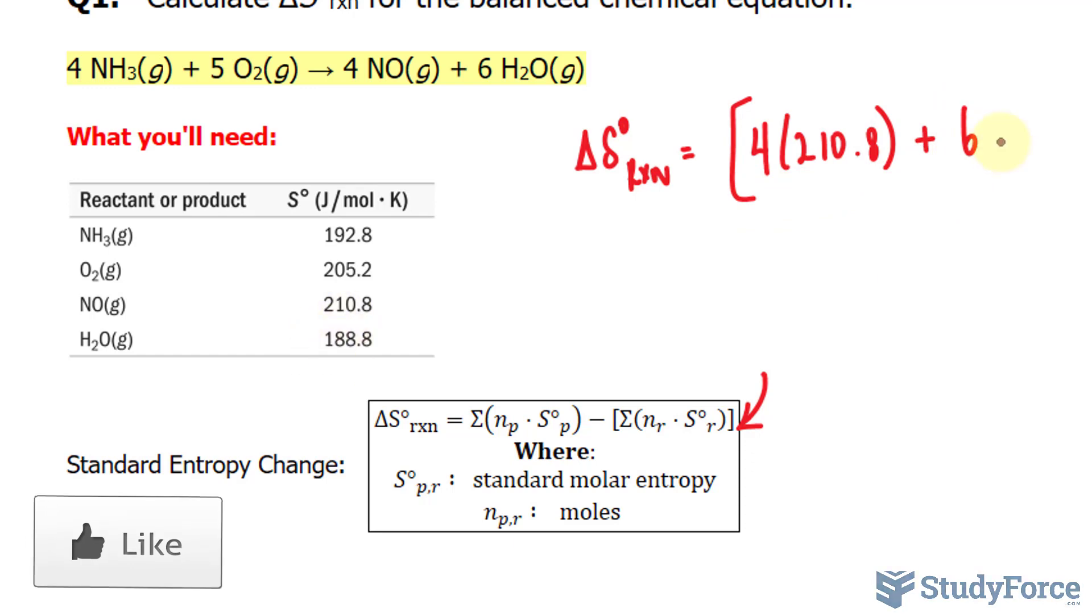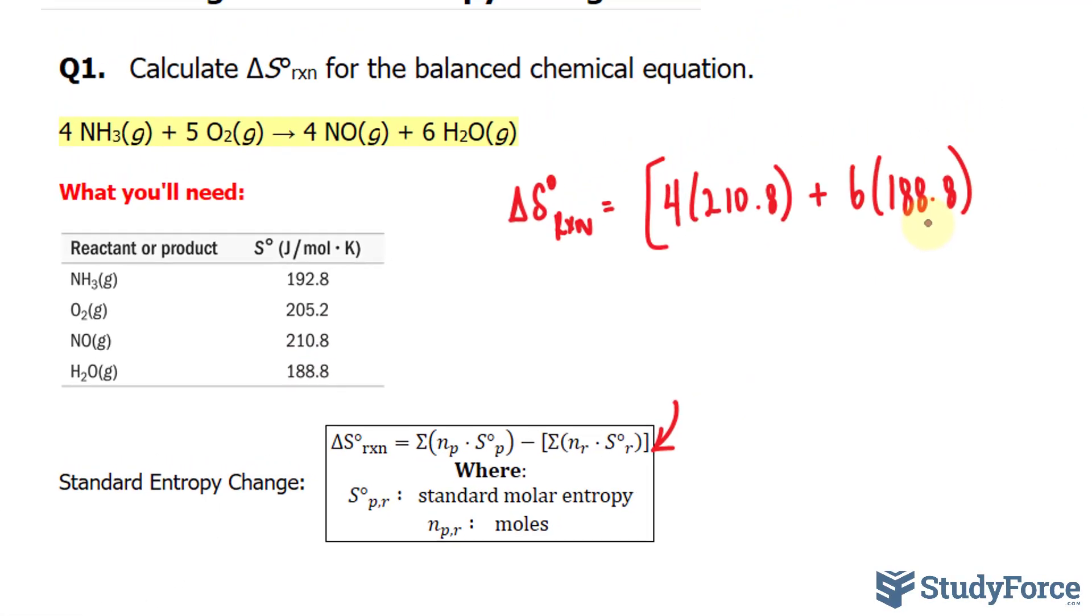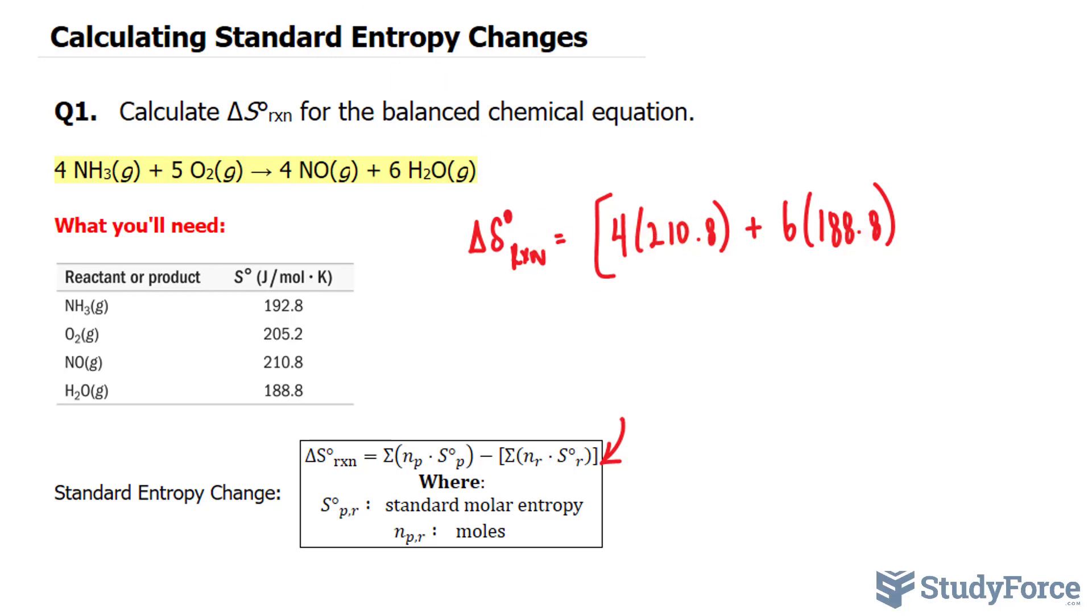And that's 188.8. And also keep in mind that these numbers are joules per mole times Kelvin, and the units for this number are in moles. So when you multiply these two numbers out, the mole units cancel out, leaving you with J over K, joules over Kelvin.